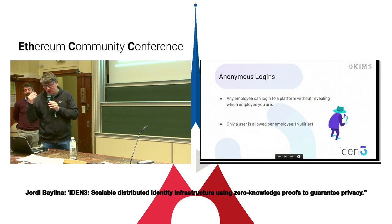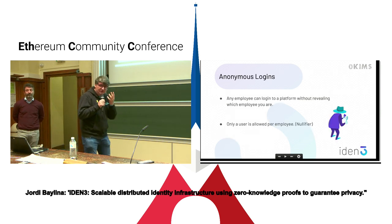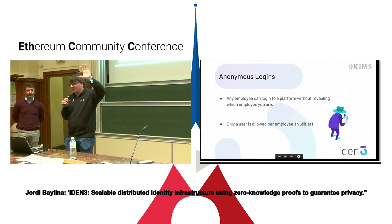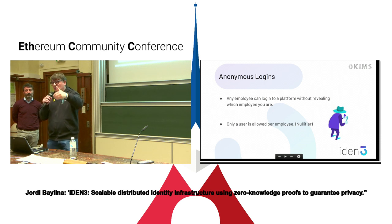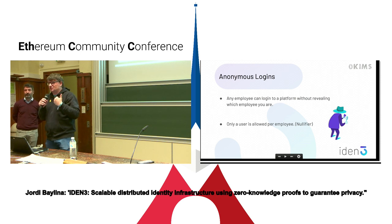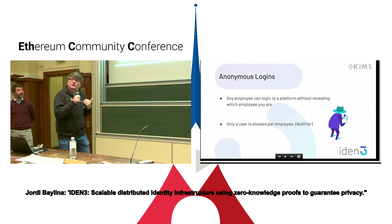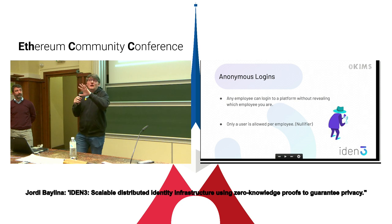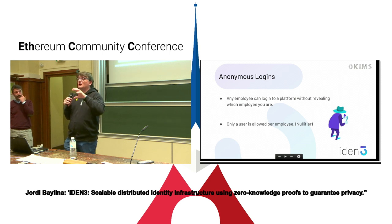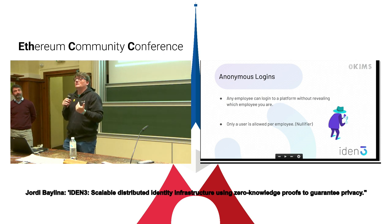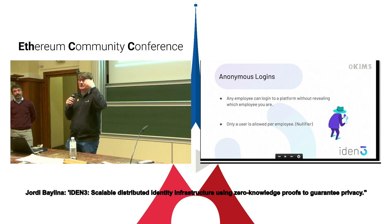I want to point out some usages of zero-knowledge, because zero knowledge is not only about scaling — it is also about privacy. The first use case is anonymous login. Imagine that everyone in this congress can access a given page, but only those who bought a ticket can access it, and you want to log in anonymously. Well, you can do that with zero knowledge — you can prove that you bought a ticket without revealing who you are. This is the kind of thing you can do.